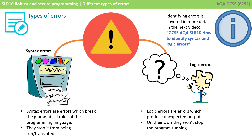Logic errors are errors which produce an unexpected output. On their own, they won't stop the program from running — the program will just behave in an odd way. If your program is free of syntax errors but has logic errors in, then these can be harder to spot, and you have to carefully work through your program code to figure out where it is you've introduced a logical error.